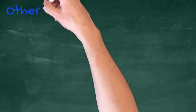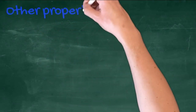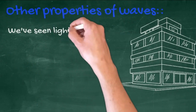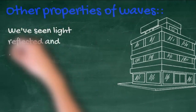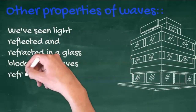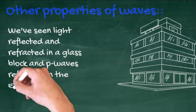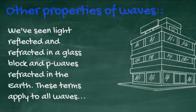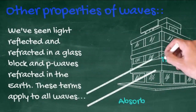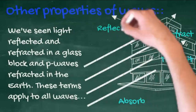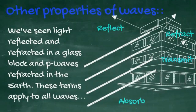Waves have a number of properties you should be able to discuss. We've seen light reflected and refracted in the glass block, and P waves refracted in the Earth. Other key terms include: absorb, transmit, refract, and reflect.